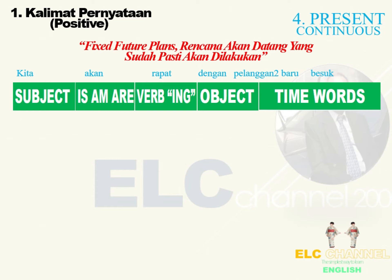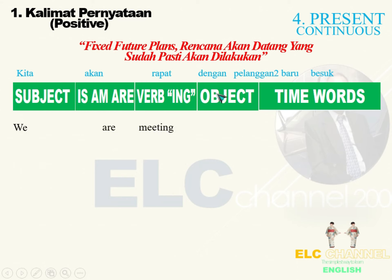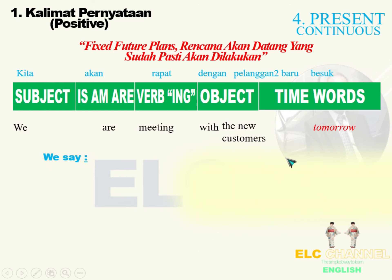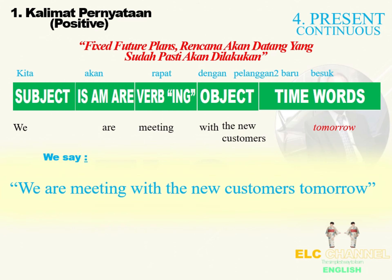Yang ketiga, Present Continuous digunakan untuk menceritakan rencana akan datang dalam waktu dekat yang sudah pasti akan terjadi. Contoh: Kita akan rapat dengan pelanggan-pelanggan baru besok. Bahasa Inggrisnya: We are meeting with the new customers tomorrow.